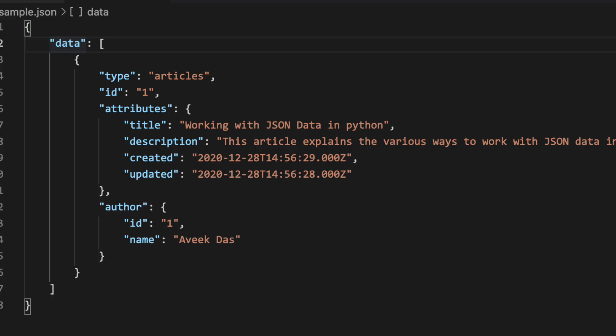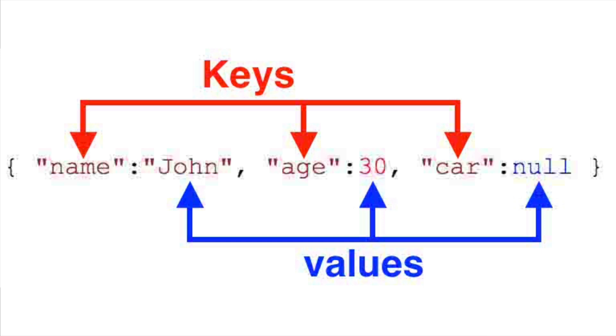JSON has some keys and values. So if you want to access some values, you can just use the key name and access it. When we extract data from Twitter, it returns the output in the form of JSON data. This data is completely in raw format and we want to transform it into a more readable and understandable form. For that, we will write a basic transformation job.